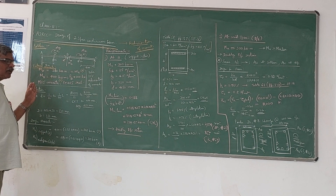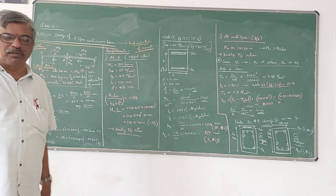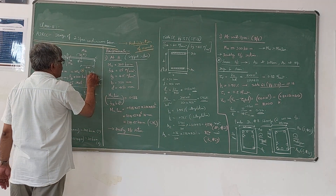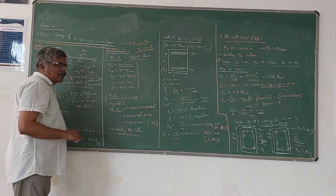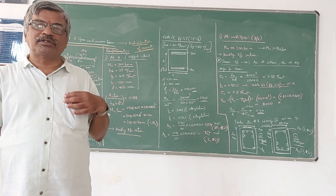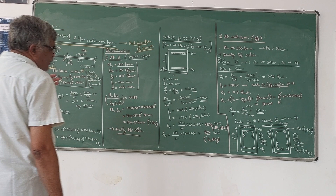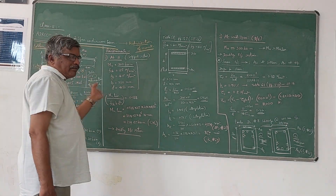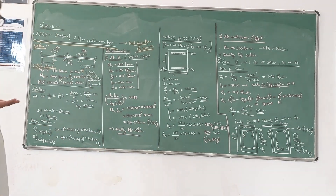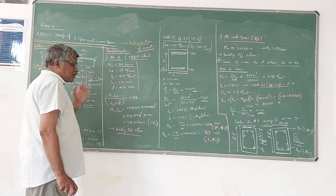The grade of concrete is M25 and steel grade is Fe415. The problem has given 25% redistribution of moments. The maximum allowable percentage of redistribution of moments is 30%, so any value below 30% can be used. Here in this problem, 25% redistribution of moments is given.